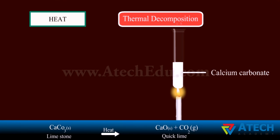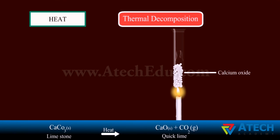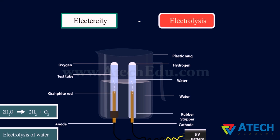Decomposition of a substance due to the application of electricity is called electrolysis. For example, when electric current is passed through acidified water, it decomposes to give hydrogen gas and oxygen gas.